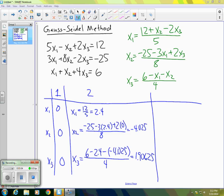When we go on to our third iteration, I'm not going to have room to squeeze everything in here, but let me see what I can fit. So the x1 is going to be 12 plus the most recent x2. So that's from our previous steps, that's negative 4.025. And then minus two times our most recent x3, which is the 1.9, and it's all divided by 5. And that comes out to be 0.8325.